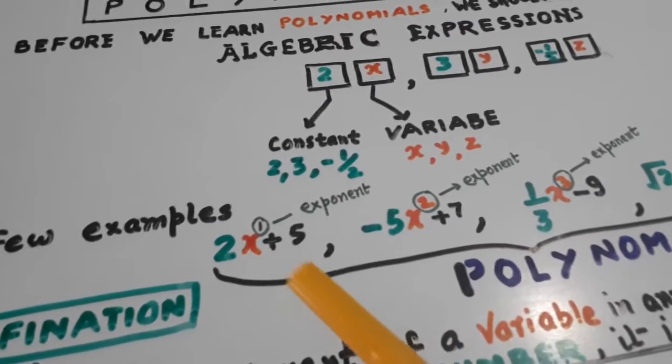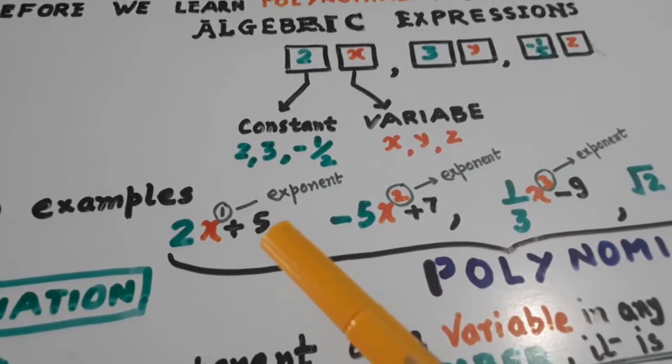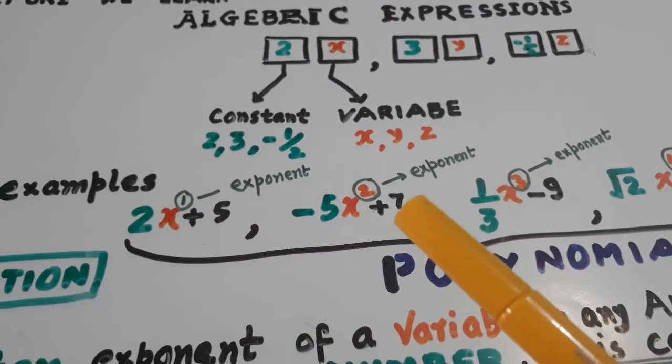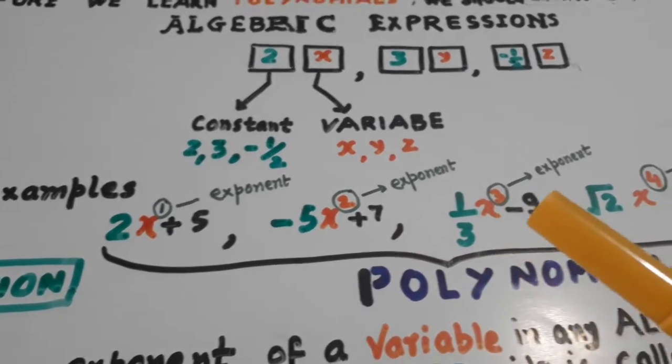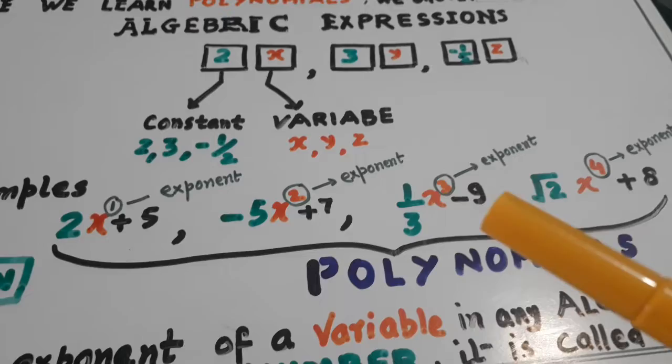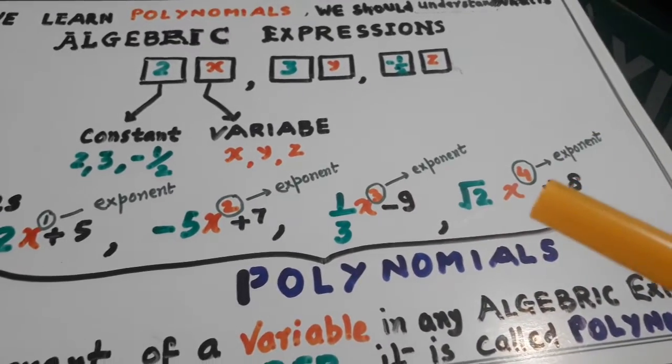Now look at more examples: 2x mein hainne 5 add kerti ya, minus 5x me, x square me hainne 7 add kerti ya, 1 by 3 x cube minus 9 licht diya, or root 2 x power 4, plus 8.